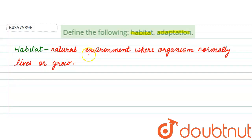Habitat is the natural environment where an organism normally lives or grows. Every organism has a unique ecosystem for its habitat. This ecosystem is its natural habitat. This is the place where an organism meets its basic needs for survival, like food, water, shelter from the weather, and a place to breed its younglings.